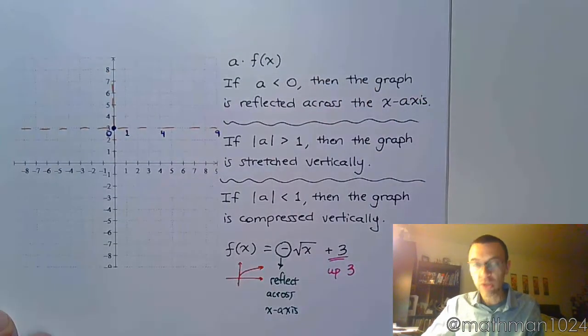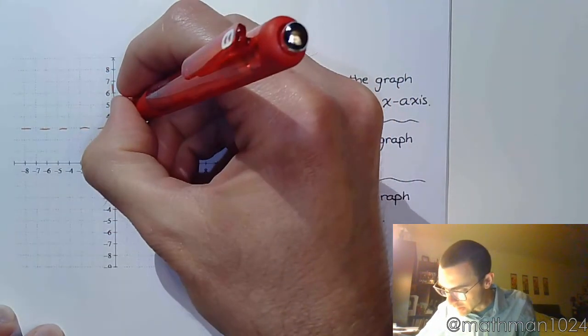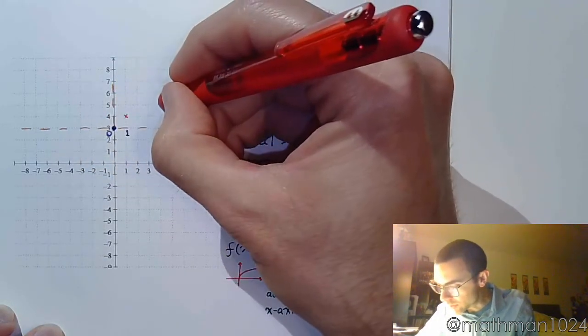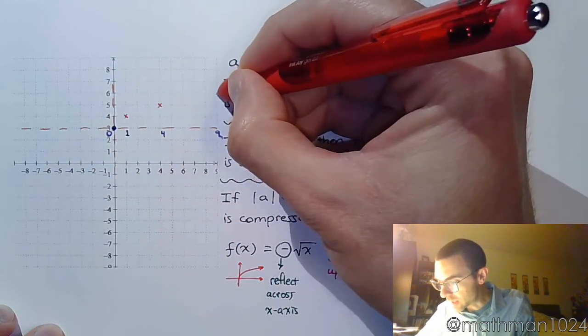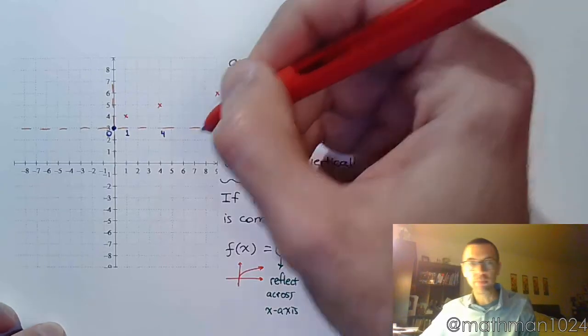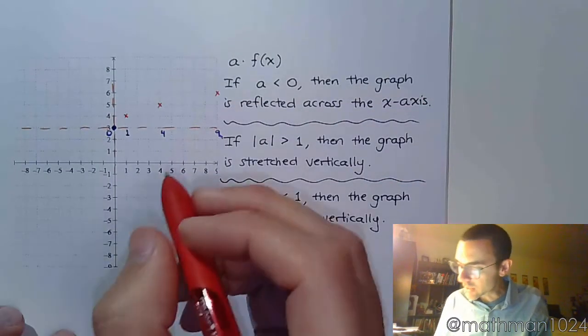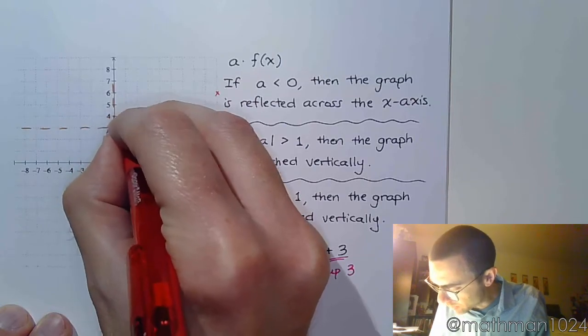and 9. So for the square root, you would have had the square root of 1 is 1, the square root of 4 is 2, and the square root of 9 is 3. So without the negative, your graph would have been this guy right here.